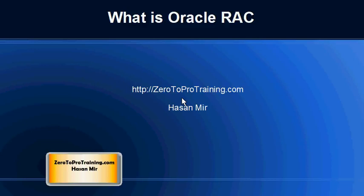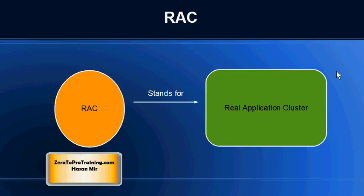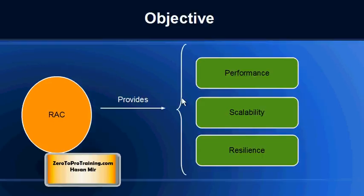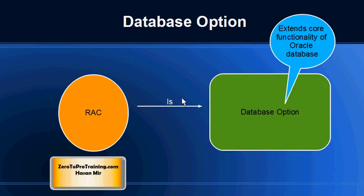In this session we will talk about what is Oracle RAC. This is Hassan Mir from zerotooprotraining.com. RAC stands for Real Application Cluster. The main objective of Real Application Cluster is to provide performance, scalability, and resilience.